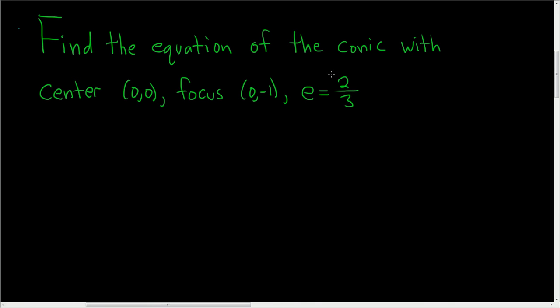Here e is called the eccentricity of the conic. Because the eccentricity is less than 1, we have an ellipse in this problem.